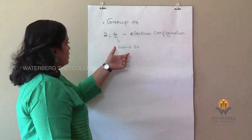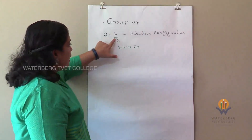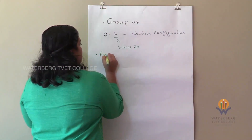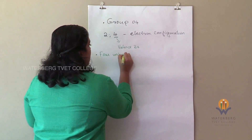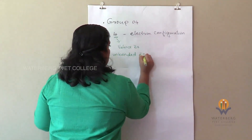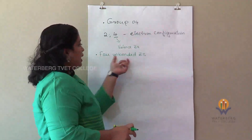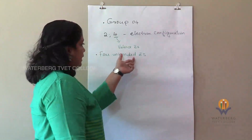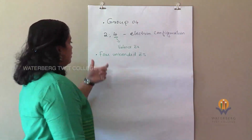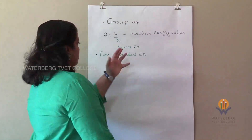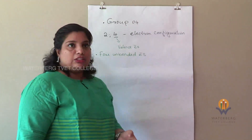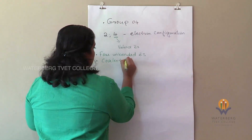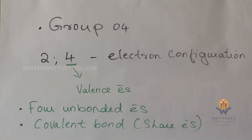So the unique property of carbon is that it has 4 valence electrons. Valence electrons are unbonded electrons, so we have 4 unbonded electrons in the carbon atom. These 4 unbonded electrons allow carbon to bond with another 4 elements. The bond becomes very strong, and carbon always shares electrons — therefore the chemical bond which carbon forms is called a covalent bond.